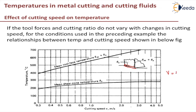The cutting speed is pi·d·n divided by 60, so as RPM increases, cutting speed increases. As RPM increases, the shear zone temperature theta-s also increases, but only up to a certain point — then it becomes constant. However, the maximum temperature theta-m plus theta-s goes on increasing and does not become constant as cutting speed increases.